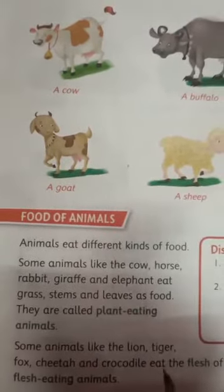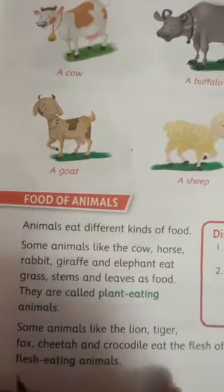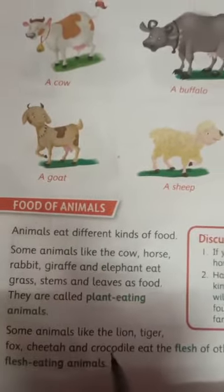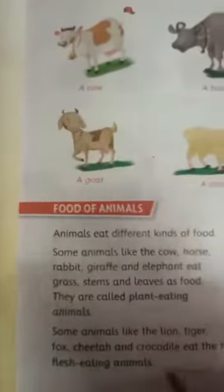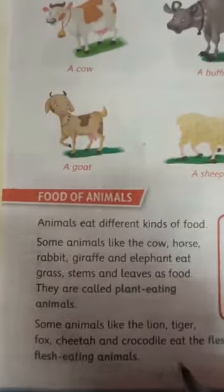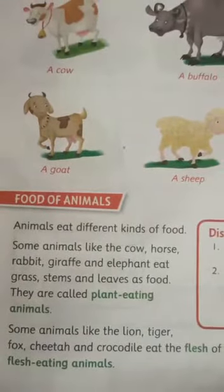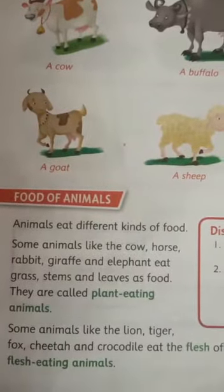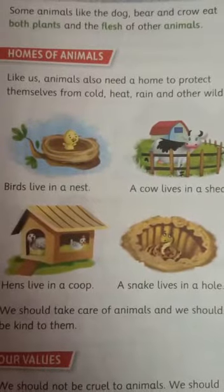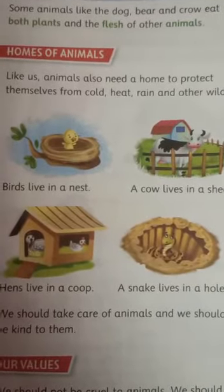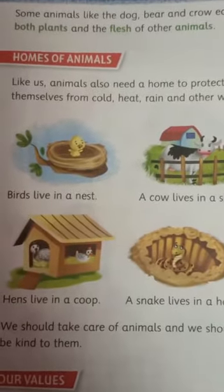Some animals like the tiger, lion, fox, cheetah and crocodile eat the flesh of other animals, so they are called flesh-eating animals. As you all know, lions eat flesh — they kill other animals and eat them. So they are known as flesh-eating animals.